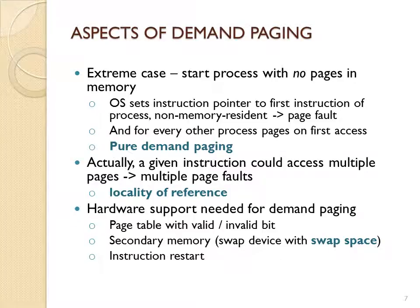In pure demand paging, nothing is pre-paged — everything is put in only on demand as needed. Instead of physically moving pages, you use a bit: once a page has been replaced, you just change one bit on the page table to invalid, to indicate that that page is no longer in a frame and is no longer valid. You can use a secondary device for swapping pages into a backing store.